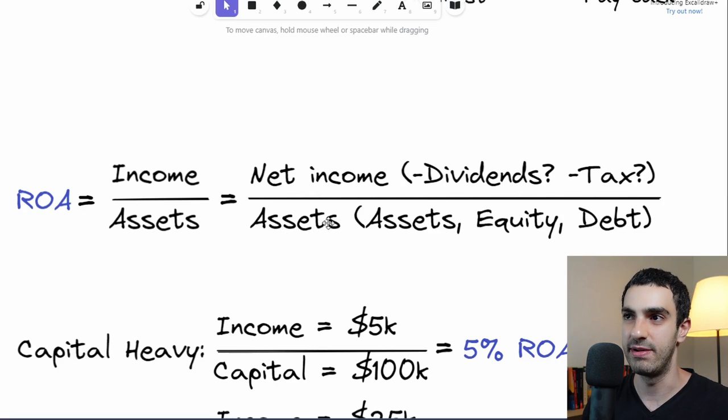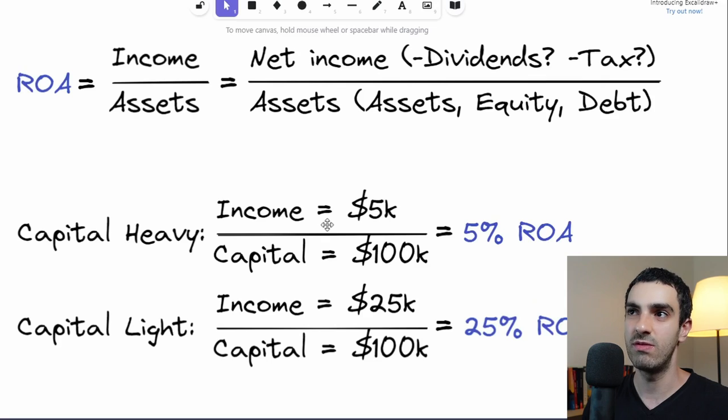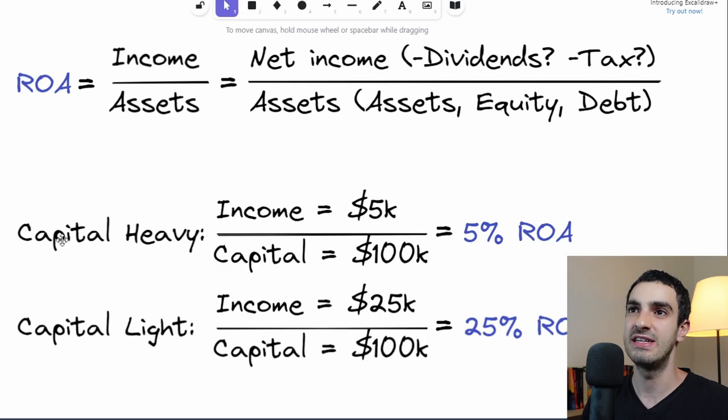Note from the edit room: the screen shown says that assets include equity, which is wrong. Only if the entire equity was used to buy assets would it be equal to the equity as well, but that's not necessarily the case.